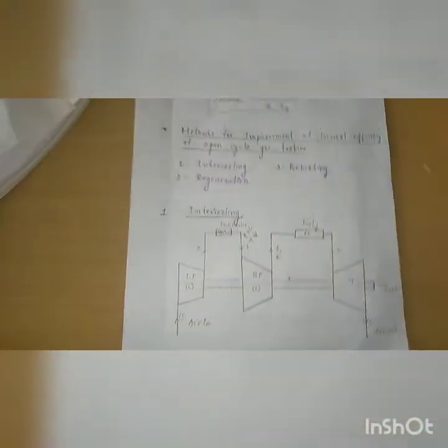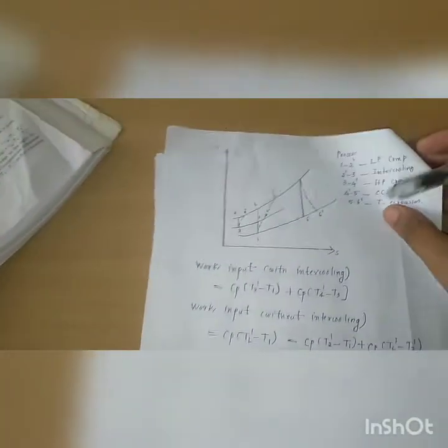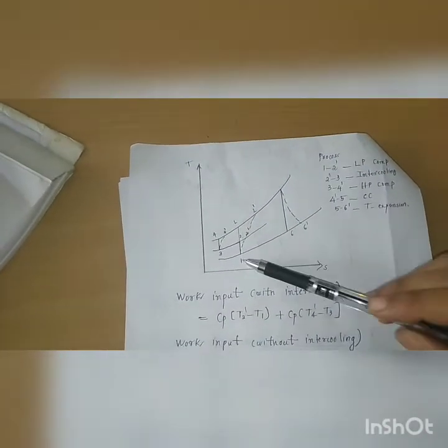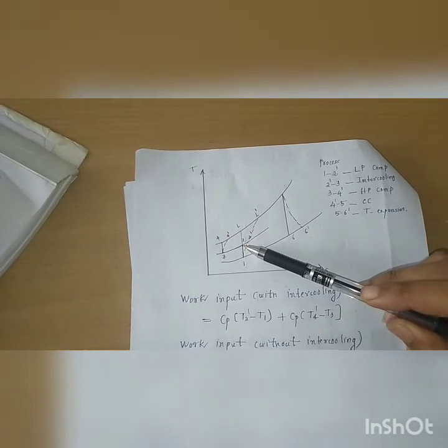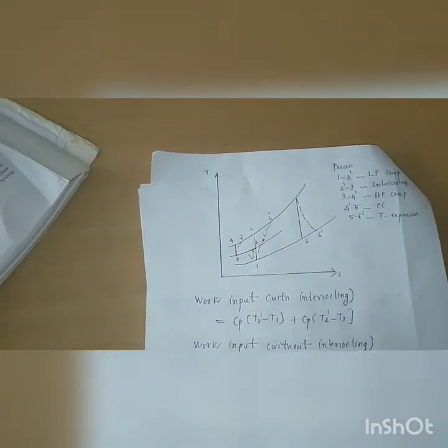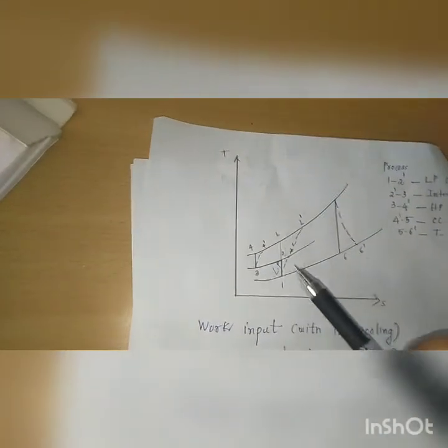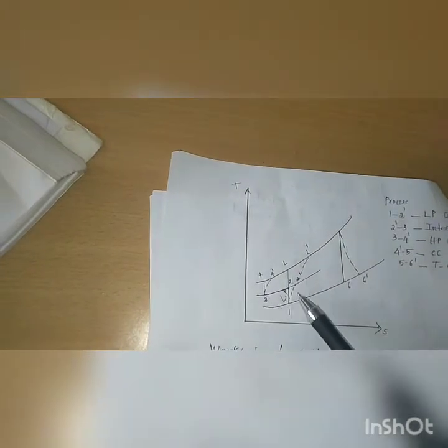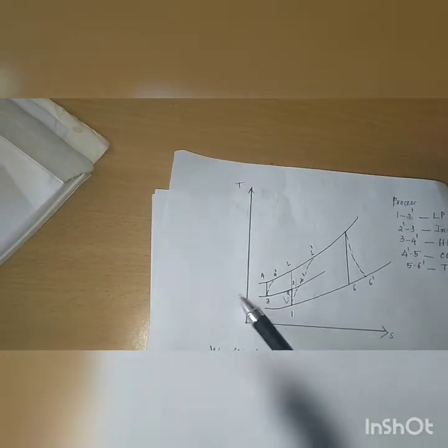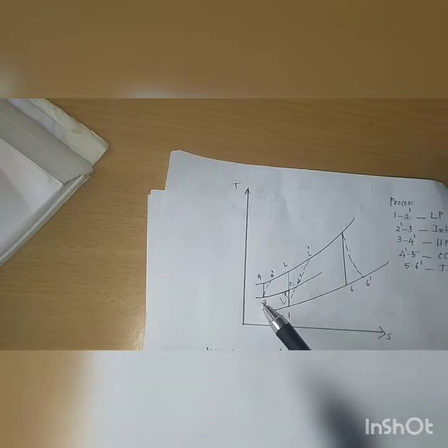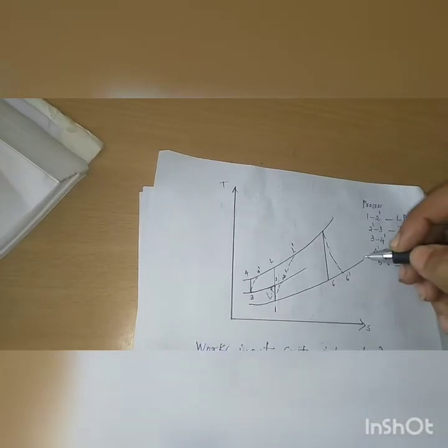Now we come to the T-S diagram. In this T-S diagram, from 1 to 2 it is the low pressure compressor. Then 2 to 3 is due to intercooling. During intercooling, the temperature T2 is reduced to T3 — that is, the temperature is reduced at constant pressure.